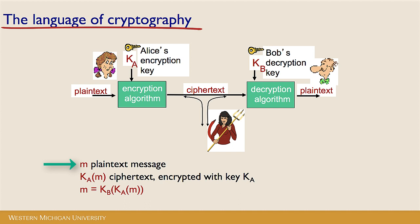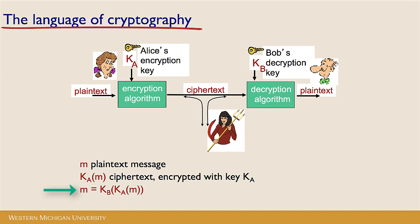M will just be our plain text message. K sub A of M is the ciphertext encrypted with key A. So K sub A of M indicates the ciphertext that Alice has encrypted with her key K sub A. We can get the original message back at Bob's end by applying K sub A of M as input to K sub B. That means if I have a message encrypted with Alice's key, I can use Bob's key K sub B to get the original message back. We use Alice's key to create the ciphertext and Bob's key to undo that encryption and get the original plain text back.